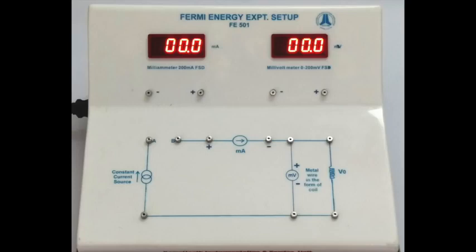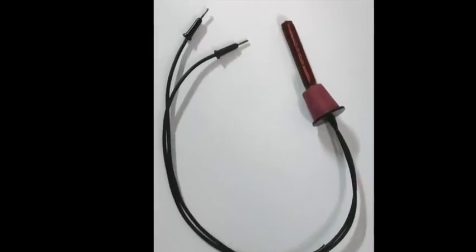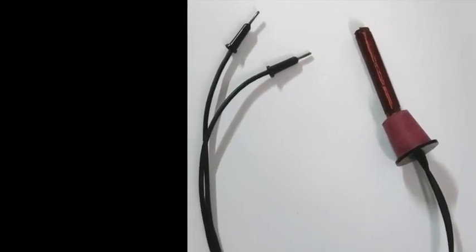This is a coil made by winding a copper wire of known length and radius on a cylindrical non-conducting support. Its two ends are connected to two wires, each one having a banana pin for connection.